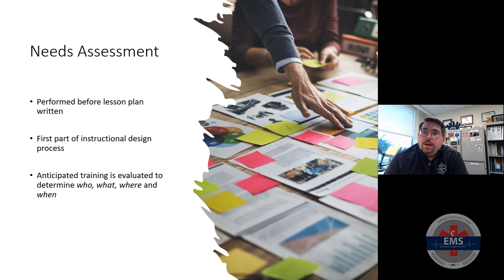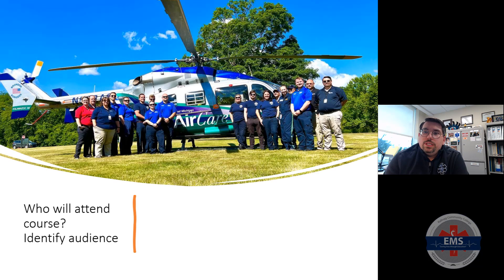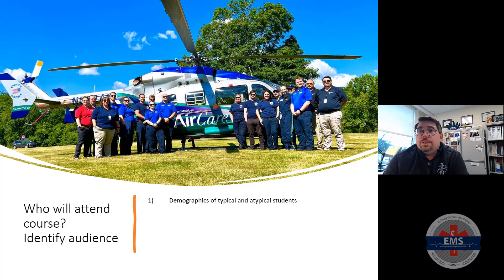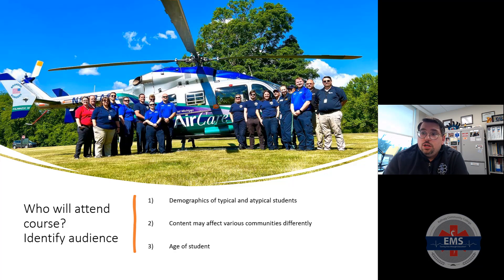Anticipate training. Determine who's going to be there, the what, the where, the when. All those aspects are important when it comes to pre-planning — it is the first step of the instructional design process. We need to identify our audience, think about demographics of typical and atypical students, and recognize that content may affect various communities differently depending on background, religious beliefs, or values. We also have to recognize the age of the student, life experience, and ability to cope with certain aspects of care — all important as we plan to identify who and what we're instructing.